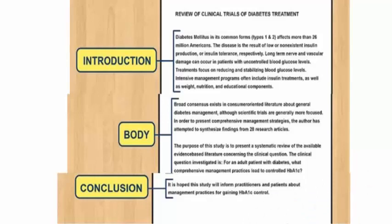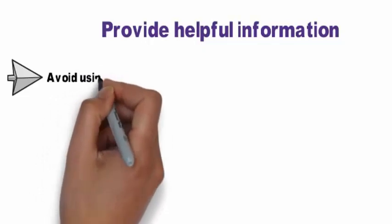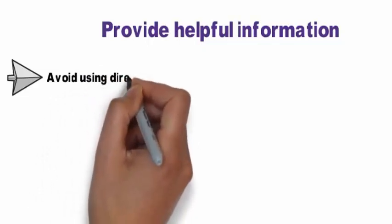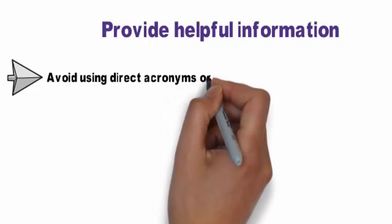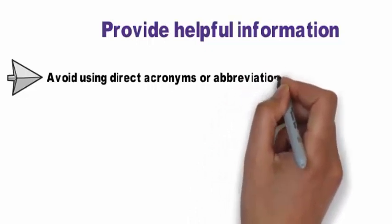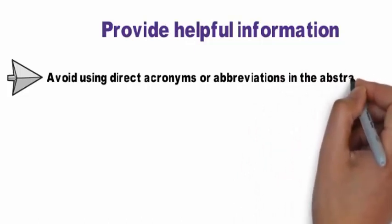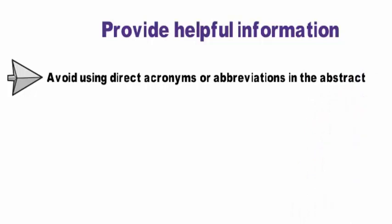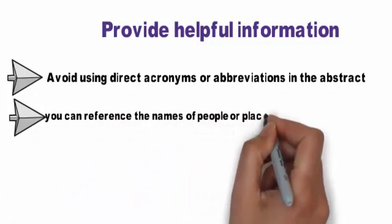Provide helpful information. Unlike a topic paragraph, which may be intentionally vague, an abstract should provide a helpful explanation of your paper and your research. Word your abstract so that the reader knows exactly what you're talking about and is not left hanging with ambiguous references or phrases. Avoid using direct acronyms or abbreviations in the abstract, as these will need to be explained in order to make sense to the reader. That uses precious writing room and should generally be avoided. If your topic is about something well-known enough, you can reference the names of people or places that your paper focuses on.